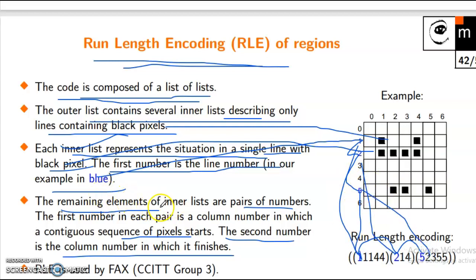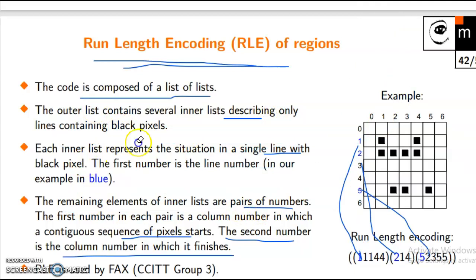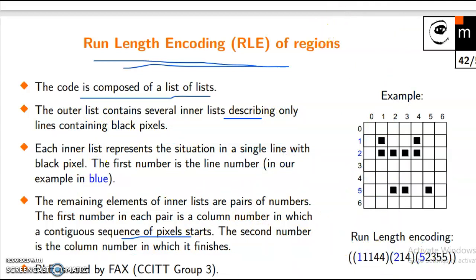The remaining elements of the inner list are pairs of numbers. The first number in each pair is a column number: 1, 1, 2, 5.